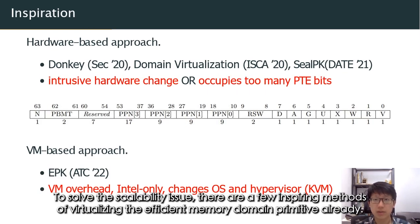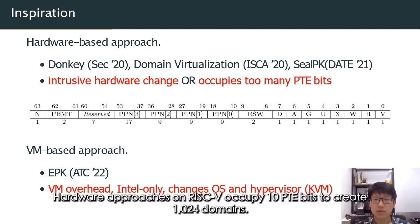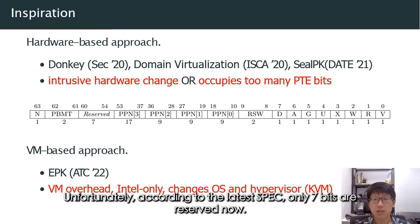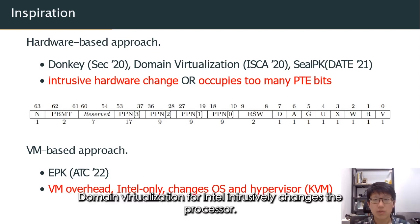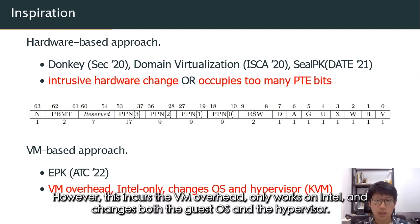To solve the scalability issue, there are a few inspiring methods of virtualizing the efficient memory domain primitive, falling into three categories. Hardware approaches on RISC-V occupied 10 page table entry bits to create 1024 domains. Unfortunately, according to the latest RISC-V documentation, only 7 bits are reserved. Domain virtualization for Intel intrusively changes the processor. Another direction combines VMFunk and MPK; however, this incurs virtualization overhead, only works on Intel processors, and changes both the guest OS and the hypervisor.